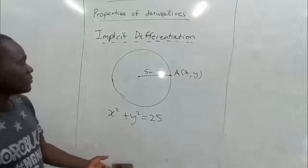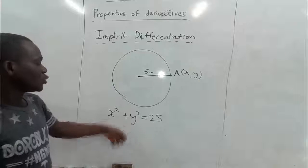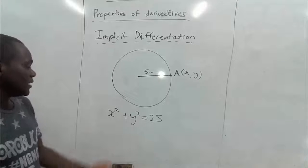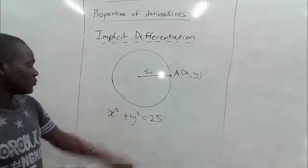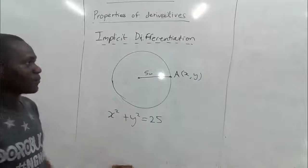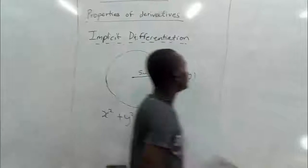So let's try using implicit differentiation to find the general gradient for the relation x squared plus y squared equals 25 here. So let's see how we do that.